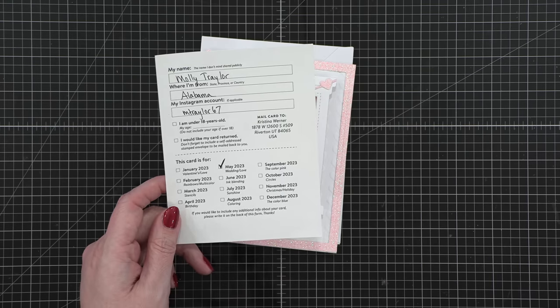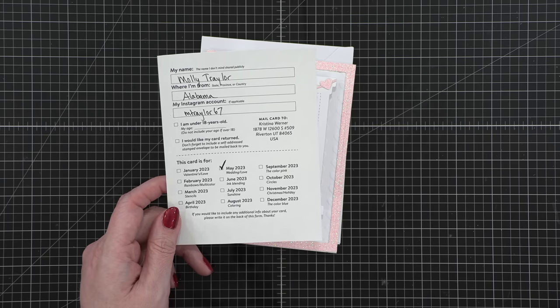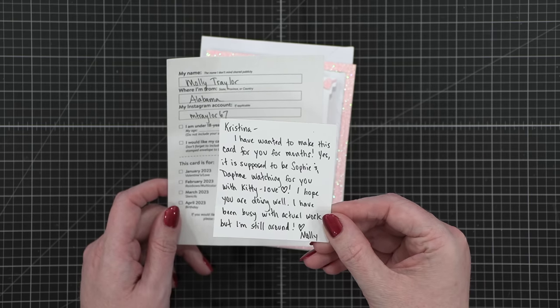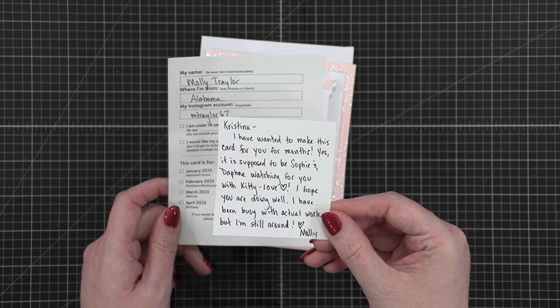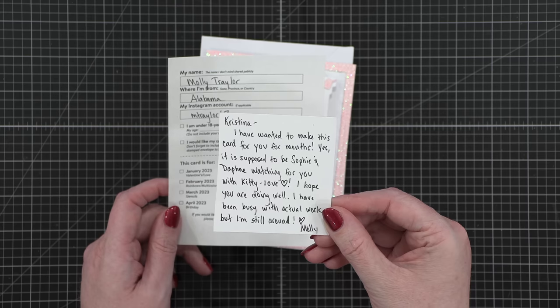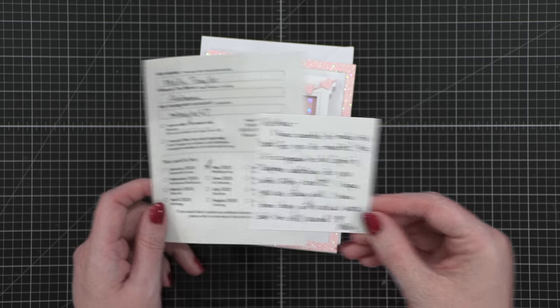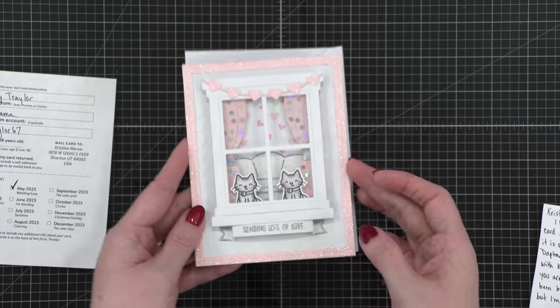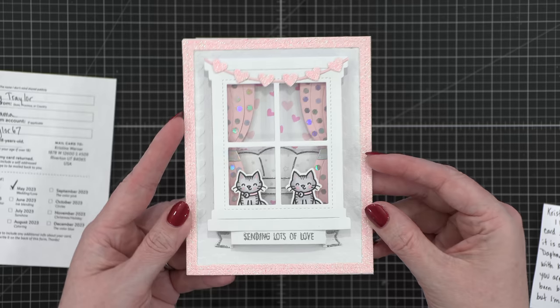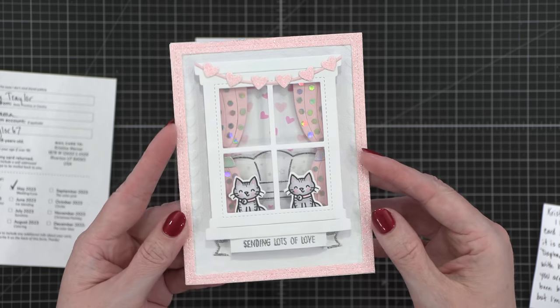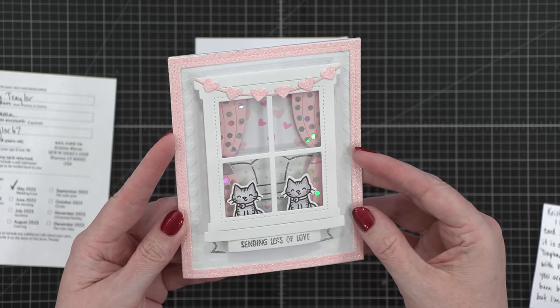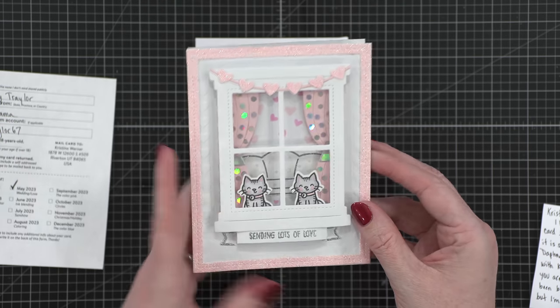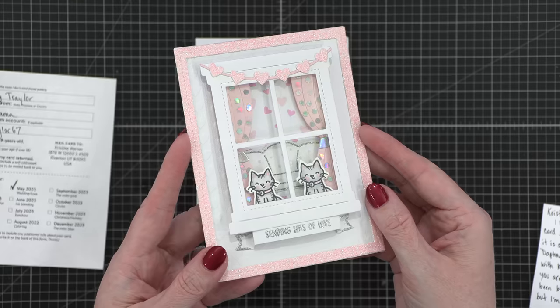This next card is from Molly in Alabama for the month of May. She actually wrote me a little note that says, I've wanted to make this card for you for months. Yes, it is supposed to be Sophie and Daphne watching for you with kitty love. I hope you're doing well. So look how cute this is. And it's so dimensional. Look at these cute little kitties. I love it so much. It's so dimensional. A little spot inside for a greeting. I love that so much.